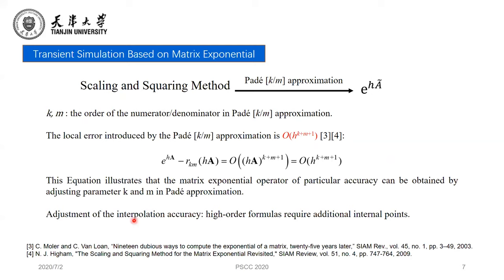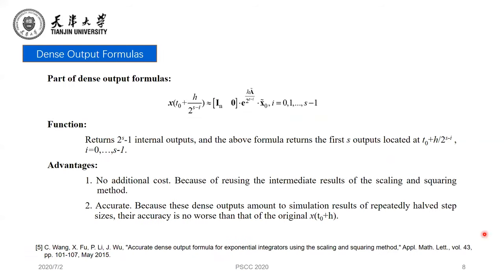If we want to use high-order interpolation to adjust the interpolation accuracy, we need additional internal points. In our previous work, an accurate dense output formula was proposed based on the scaling and squaring method. The formula can return additional internal outputs and retains the first S outputs located at specified time points. This formula reuses the intermediate results of the scaling and squaring method, so it has no additional cost. Because dense outputs amount to simulation results of rapidly halved step sizing, the accuracy is no worse than that of the original method. Dense output formulas are efficient methods to get internal outputs.